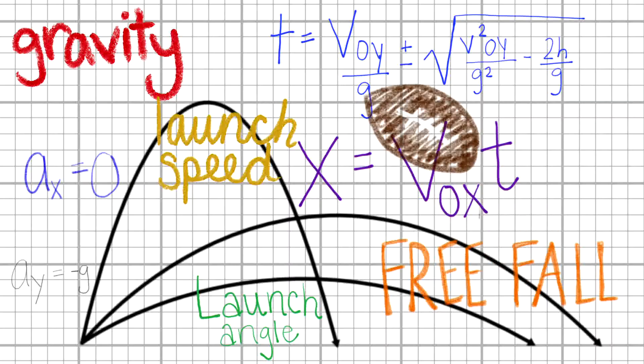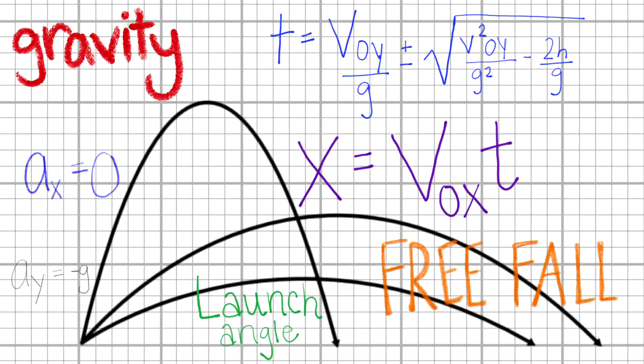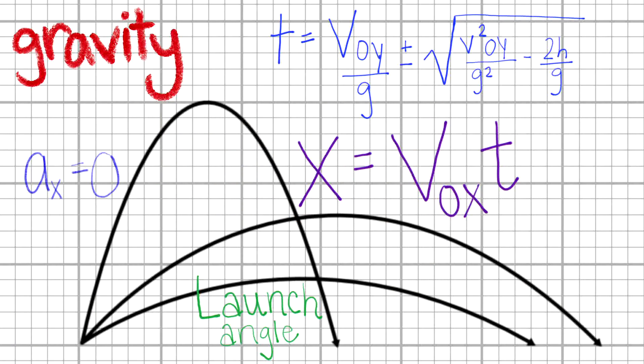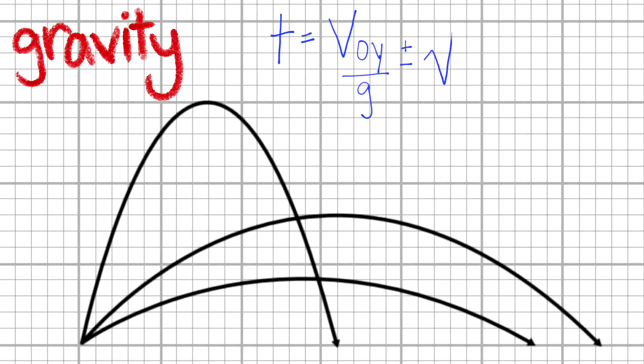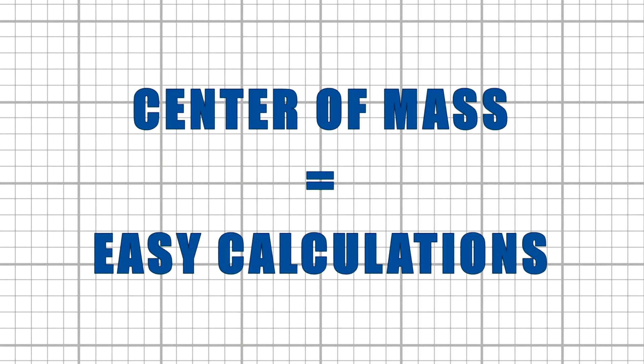Step one: we pretend all the mass is located at the center of mass — we know how that behaves due to constant acceleration. Step two: we can add on the rotational motion based on its initial conditions. This idea of the center of mass simplifies the problem, and these two dynamics don't seem so complicated after all.